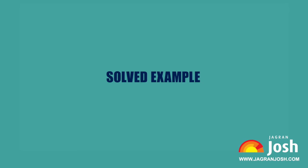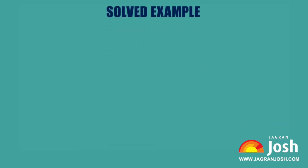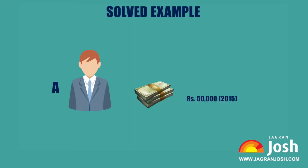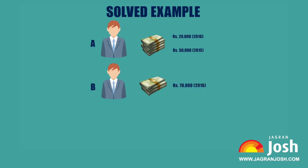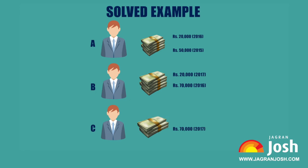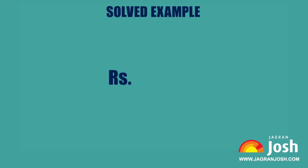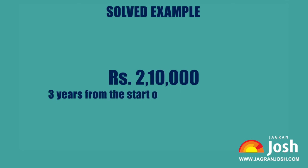Solved example: A started a business investing rupees 50,000 in 2015. In 2016, he invested an additional rupees 20,000 and B joined him with rupees 70,000. In 2017, B invested another additional rupees 20,000 and C joined them with rupees 70,000. What will be A's share in the profit of rupees 2,10,000 earned at the end of three years from the start of the business in 2015?